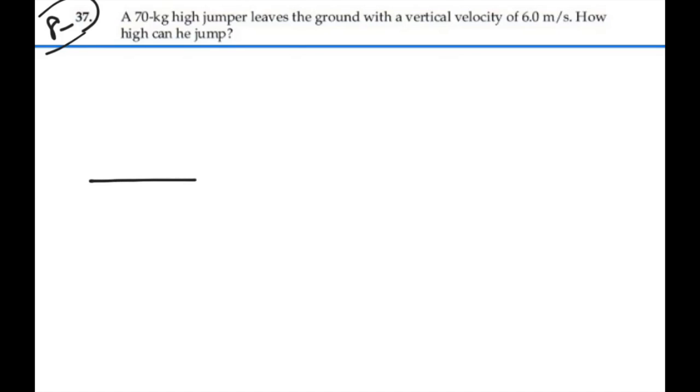Let's take a look at this situation. Here's point A and here's our high jumper, and he or she is jumping up. So the velocity at A is 6 meters per second.